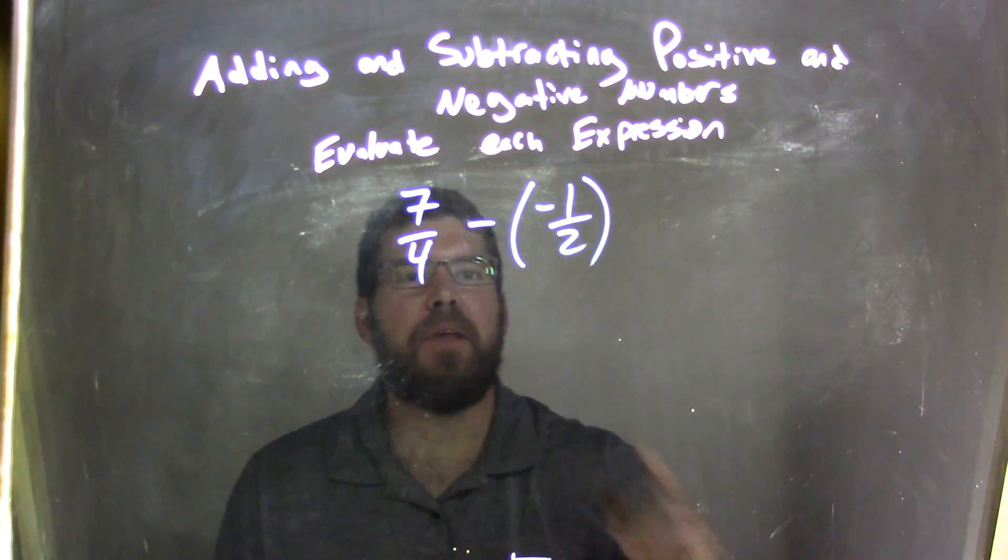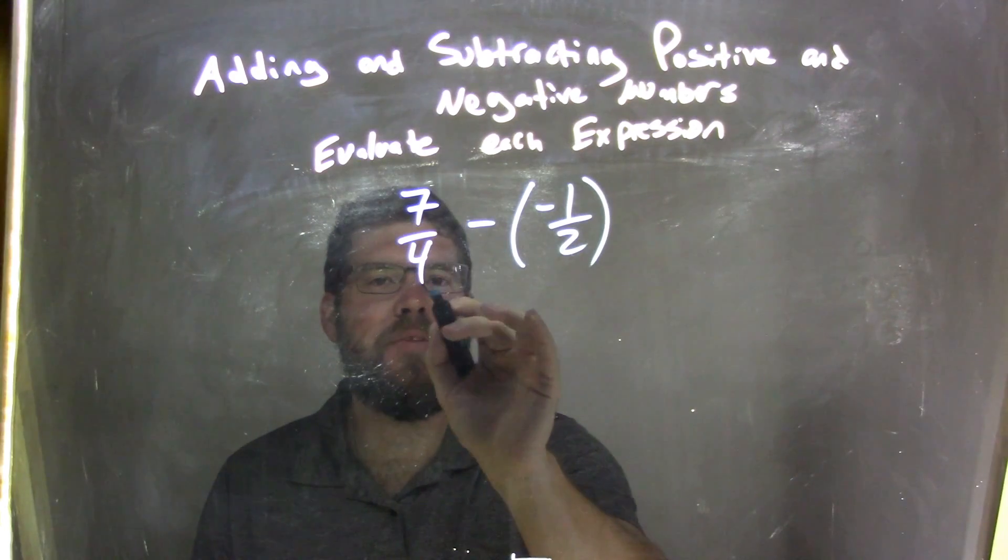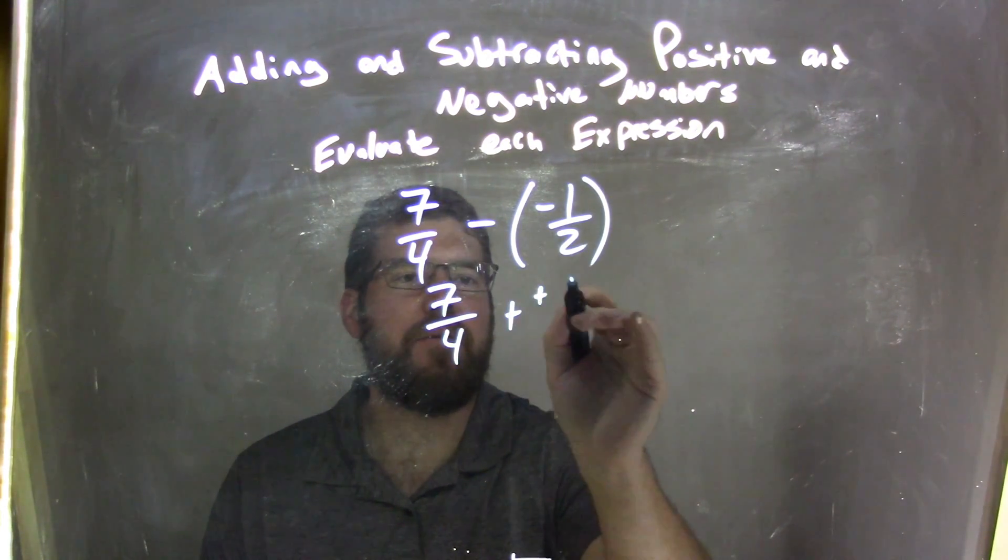With that, I know that minus a negative is the same thing as adding a positive, so I'm going to rewrite that. 7 over 4 plus a positive 1 half.